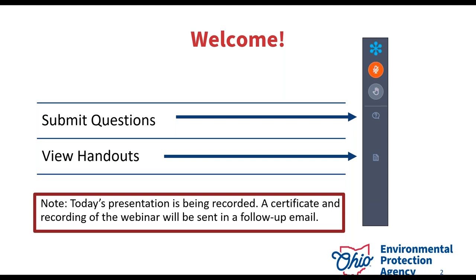We'll do our best to answer questions as they come in and will address commonly asked questions during the Q&A at the end. If we're not able to respond during the webinar, we will reach out to you via email after. To view and download handouts, please click on the documents icon on your attendee interface. A copy of the PowerPoint slides as a PDF is also included. This webinar is being recorded and you will receive an email with a link to the recording and a link to the session survey. The survey will also pop up once the webinar ends. We value your feedback. Please note, you will be sent your certificate of attendance in a separate email from an Ohio EPA staff member, not from the GoToWebinar platform.